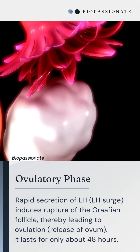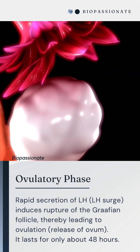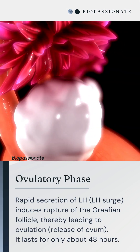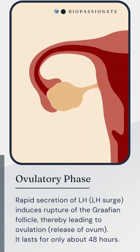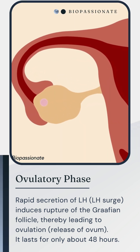During the ovulatory phase, due to the rapid secretion of luteinizing hormone, the Graafian follicle is ruptured to release the ovum.